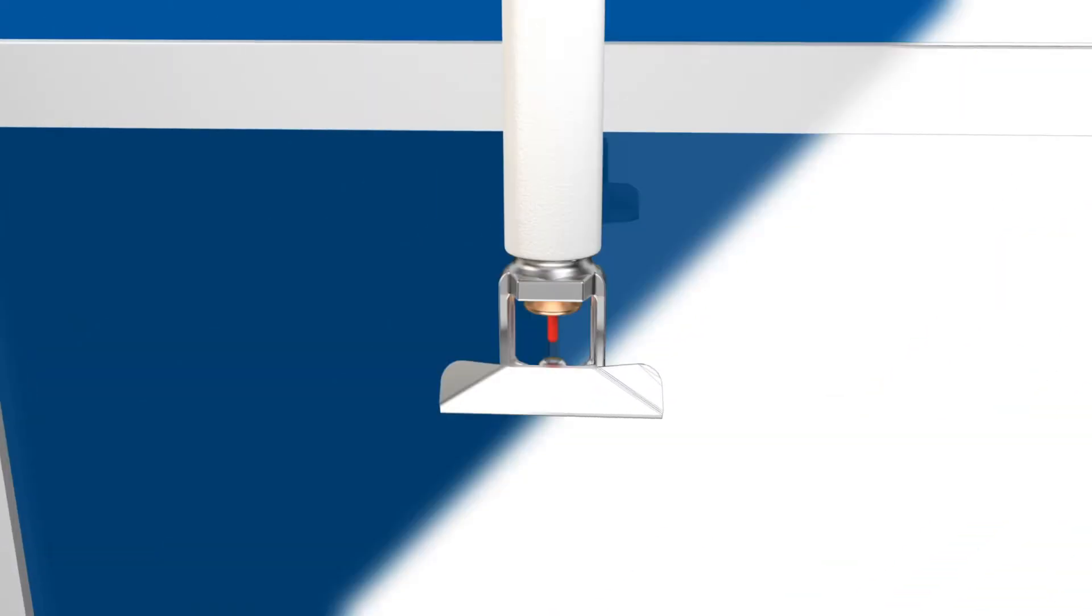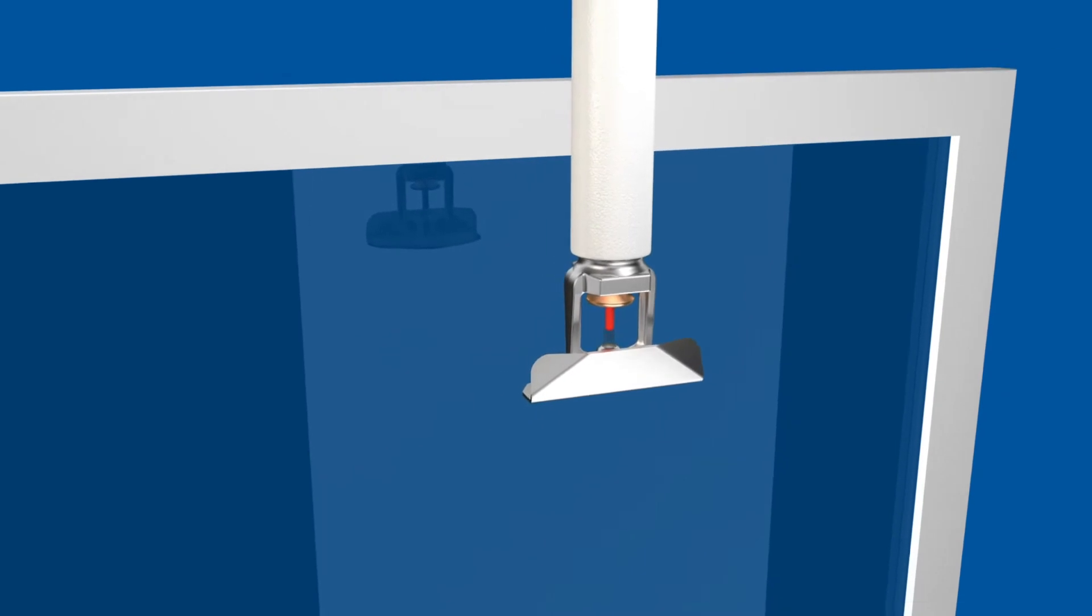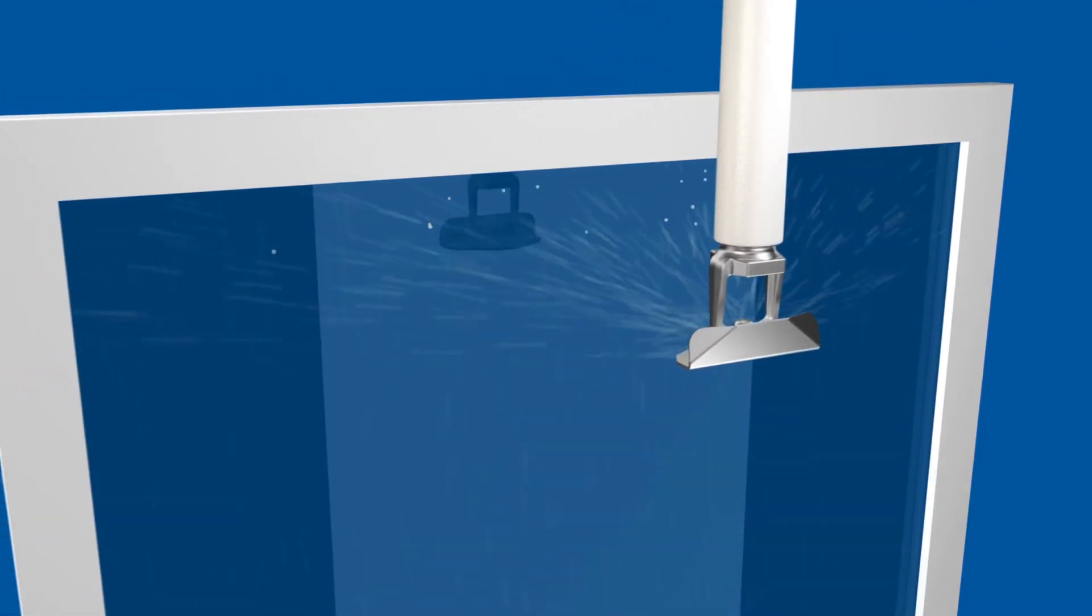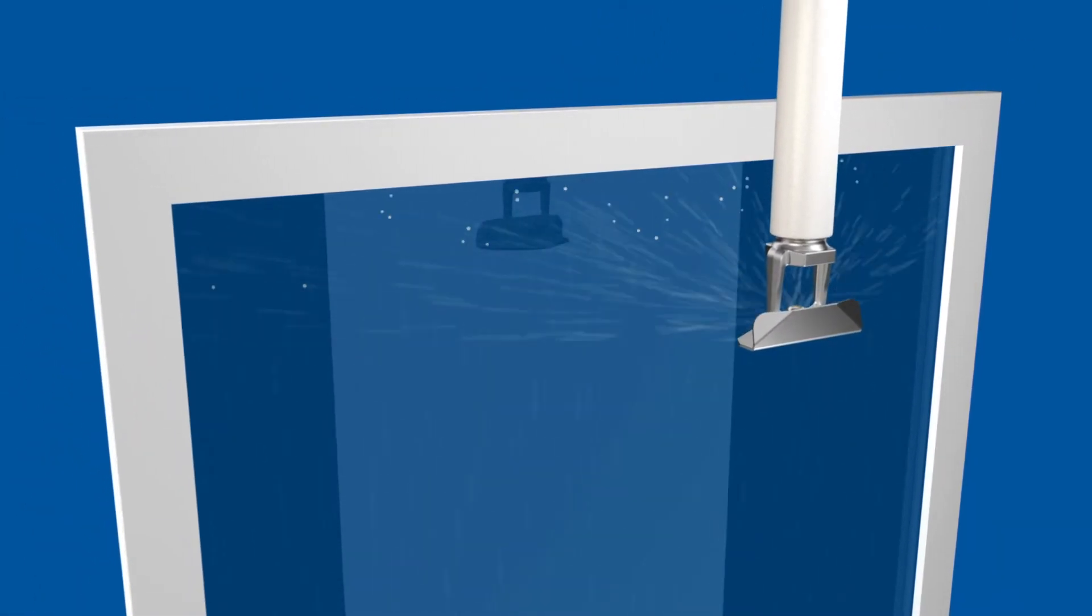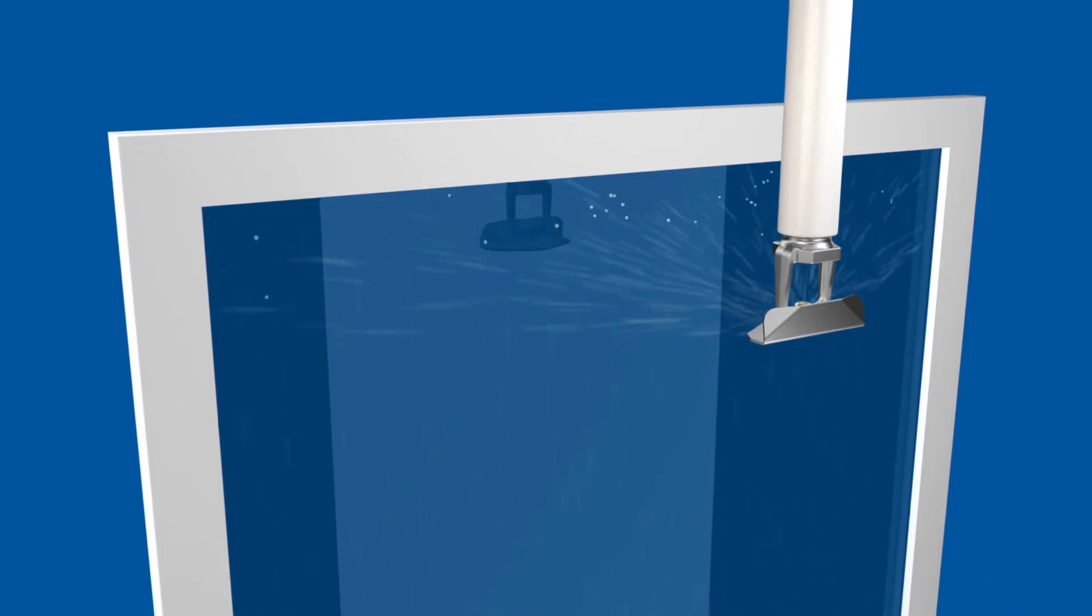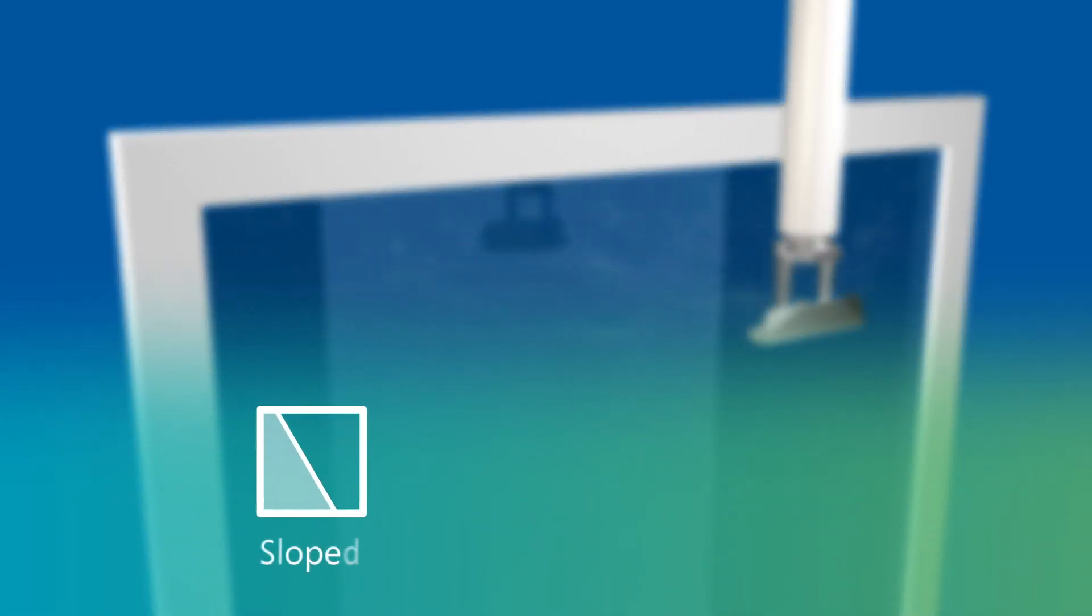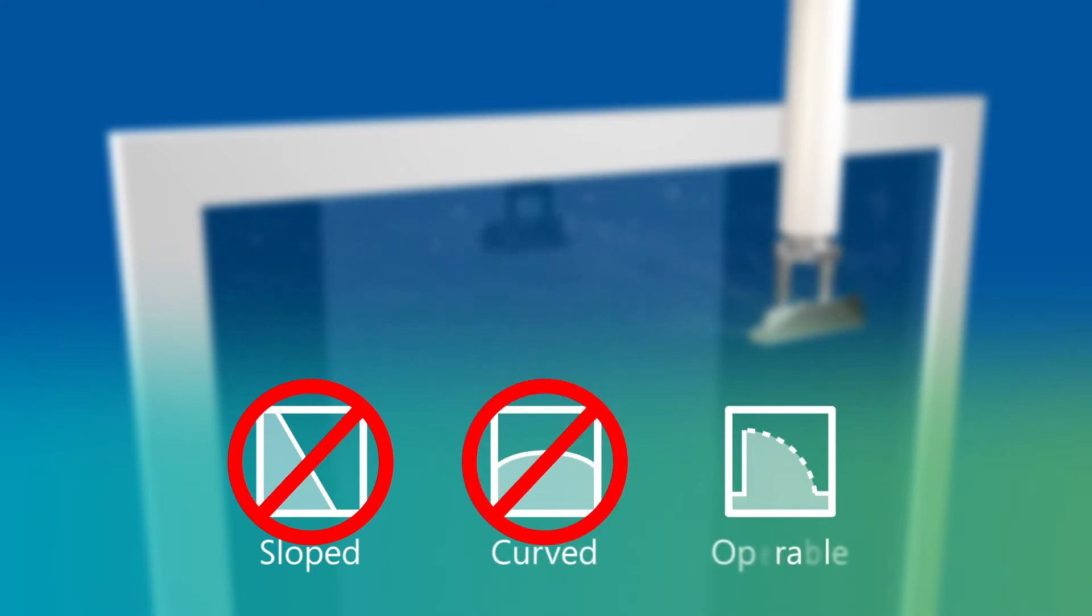Window sprinklers are designed to provide full protection for the entire window. The spray pattern wets the full pane of glass from corner to corner, leaving nothing dry. The sprinkler is designed for flat surfaces and typically is not used on sloped, curved, or operable glass.